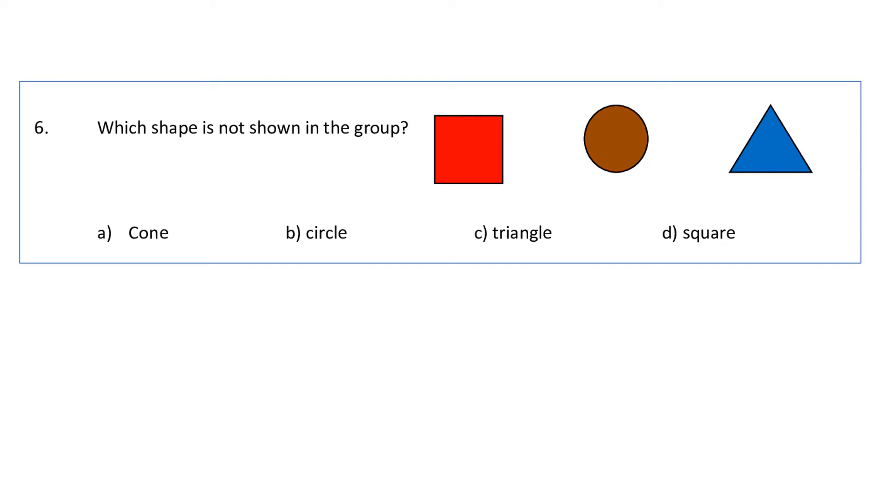Question 6: Which shape is not shown in the group? We can see square is visible here, circle is there and triangle is there. When we see the options: cone, circle, triangle and square. The cone shape is not visible here. We all know the cone shape, right? The ice cream cone you all have seen. So cone shape is not visible among these 3 pictures.